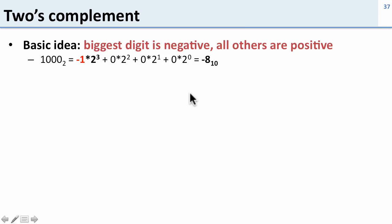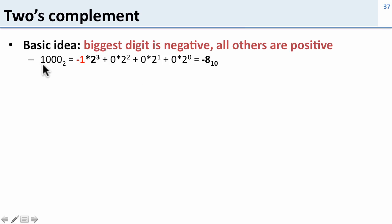Let's take a look at an example. Here's a binary number 1 0 0 0, and that biggest digit, the first one, is going to be negative 1 times 2 to the third, plus 0 times 2 to the second, 0 times 2 to the 1, 0 times 2 to the 0. So this is negative 8. This digit right here is negative 8, this digit would be positive 4, positive 2, and positive 1.